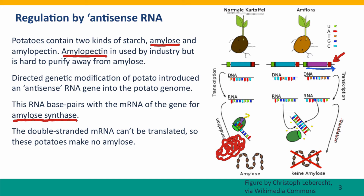If you take this RNA and flip it over, it will base pair with the messenger RNA. This is antisense RNA, and that's what it does in the cell — this antisense RNA base pairs with the messenger RNA. Now the messenger RNA is double-stranded; it can't bind to the ribosome, it can't be translated to produce the amylose-synthase protein. And so these potatoes make no amylose.